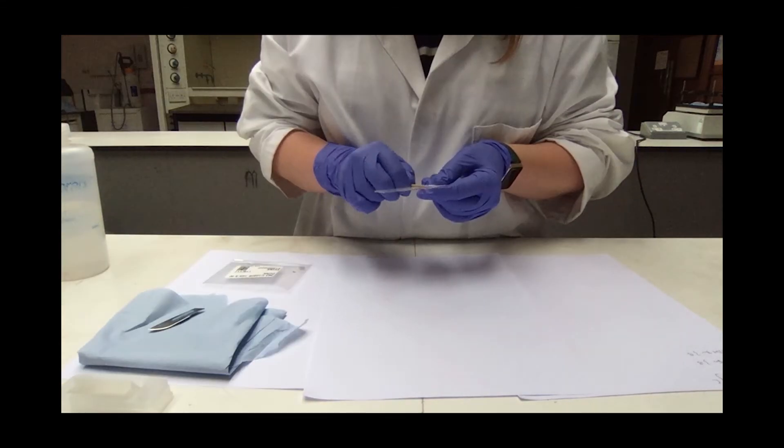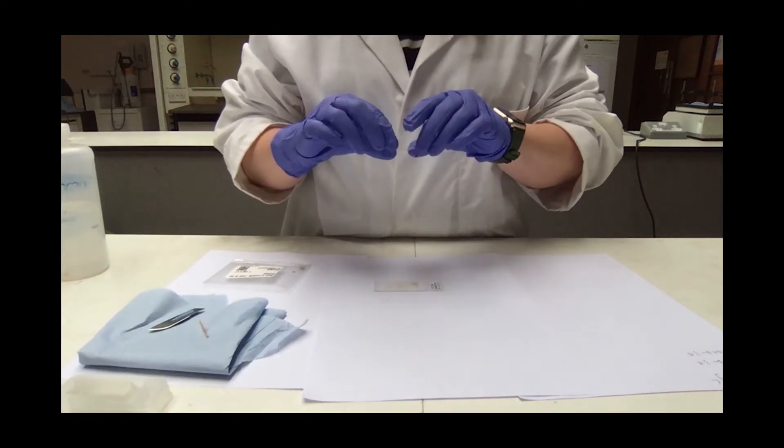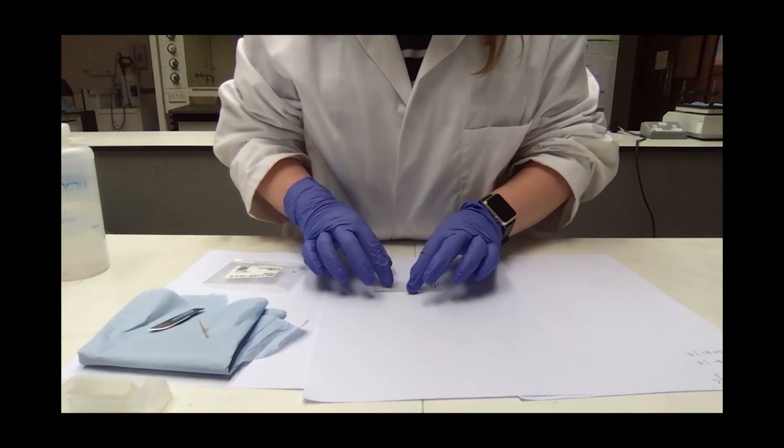We then glue another very thin piece of glass on top to protect the sample from being touched. And once that's dried, we can put it under the microscope to look at. Because the nanofossils are so small, we don't need a lot of sample at all, just a crumb will do.